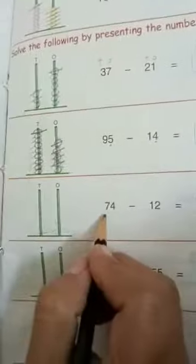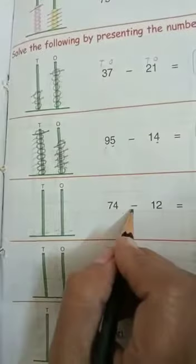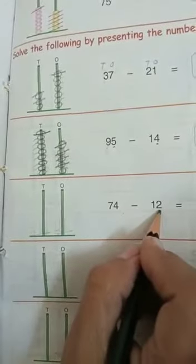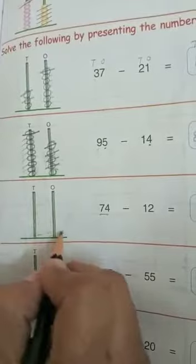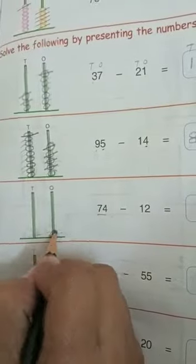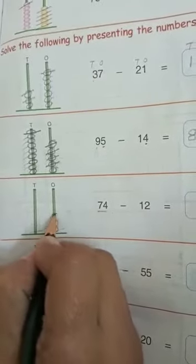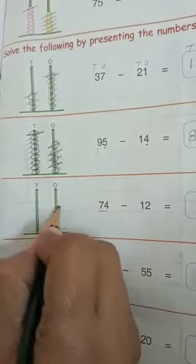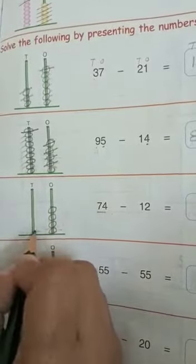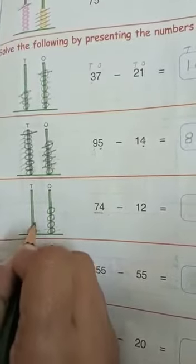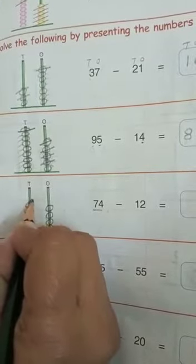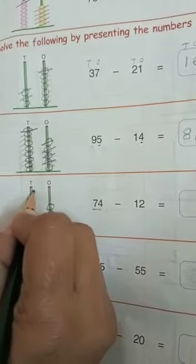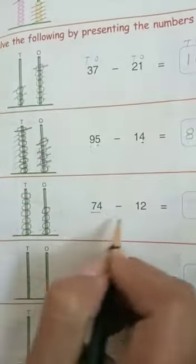Now next: 74 minus 12. We will show 74 on this abacus. 4 ones: 1, 2, 3, 4. 7 tens: 1, 2, 3, 4, 5, 6, 7.